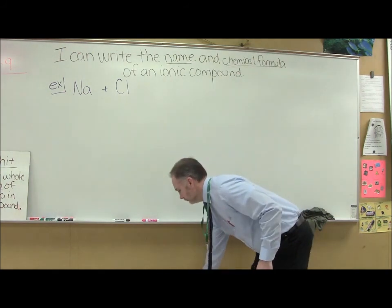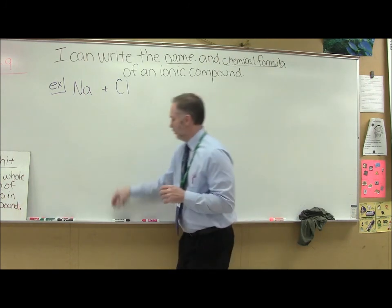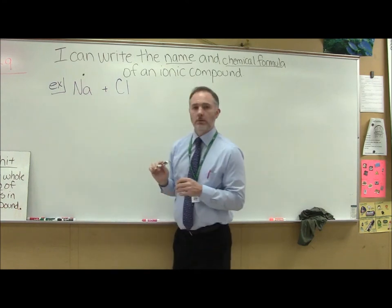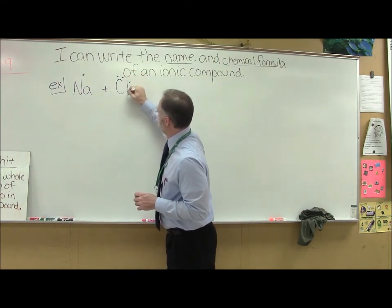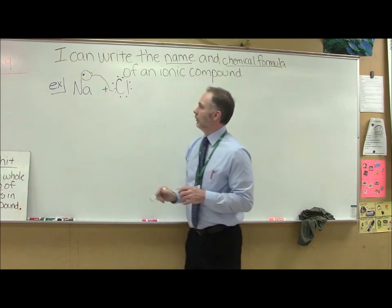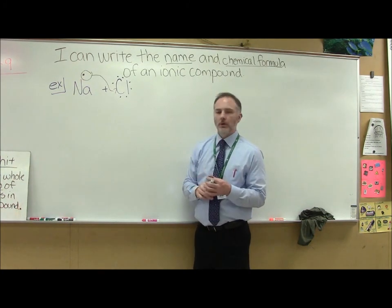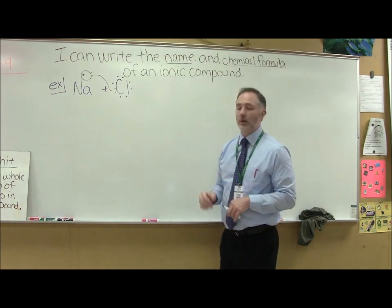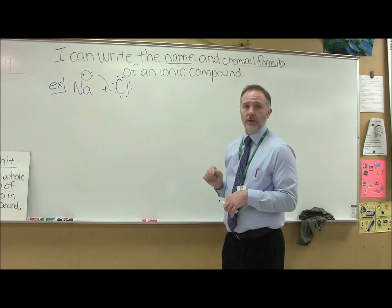So what we did in class earlier is we showed how many valence electrons sodium would have, one, and how many chlorine would have, seven. And we figured out that the ratio of one sodium to one chlorine makes sodium content with its octet and also chlorine. I'm going to show you an easier way to do this without having to draw those valence electrons.